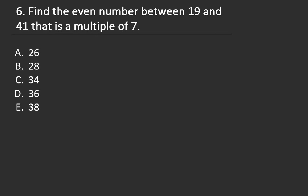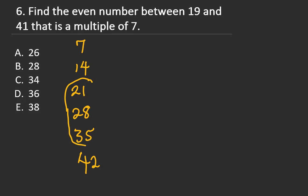Question 6: Find the even number between 19 and 41 that is a multiple of 7. Multiples of 7 are 7, 14, 21, 28, 35, 42. Between 19 and 41, the multiples are 21, 28, and 35. Finding the even number: 21 and 35 are not even numbers, so the right answer is 28 — option B.